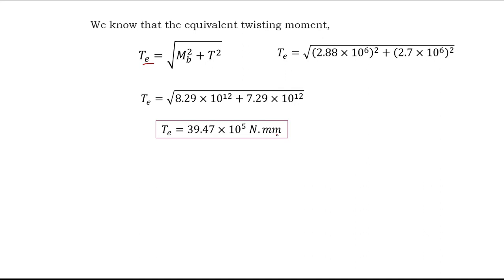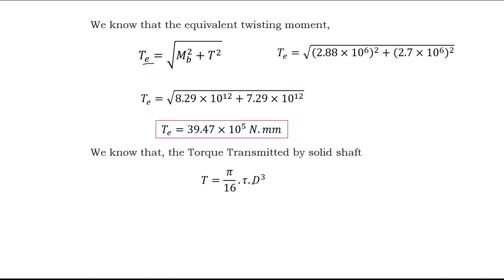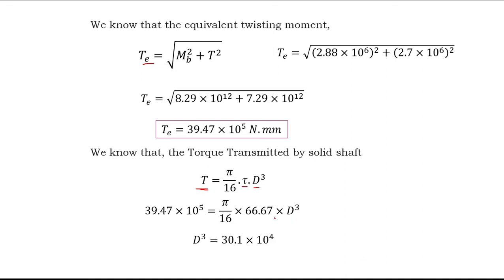We know the torque transmitted by a solid shaft: T equals pi by 16 times tau times D cubed. The T here is the equivalent twisting moment. We already calculated the equivalent twisting moment, and we know the allowable shear stress. The only unknown is the diameter. Rearranging this equation, we get D cubed equal to 30.1 into 10 to the power 4. Taking the cube root, we get the diameter of the shaft equal to 70 mm.